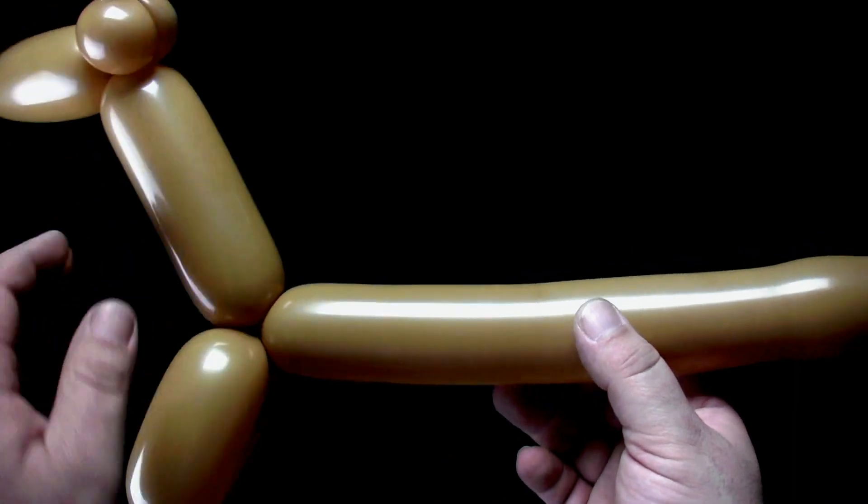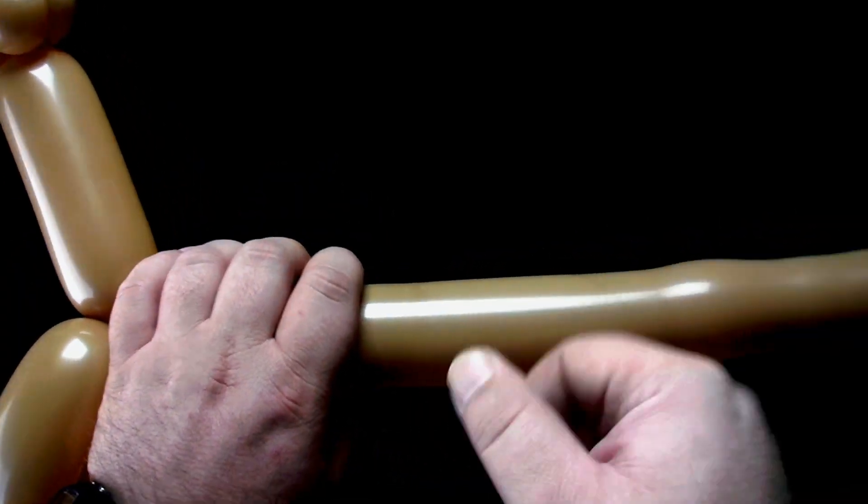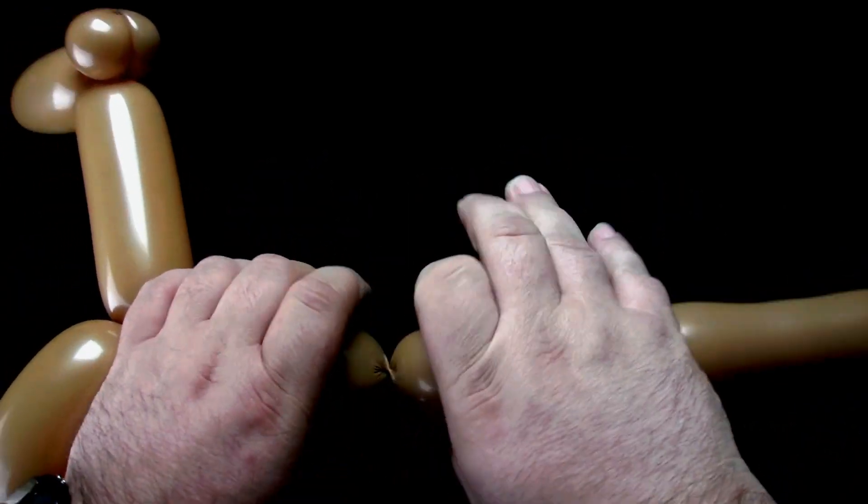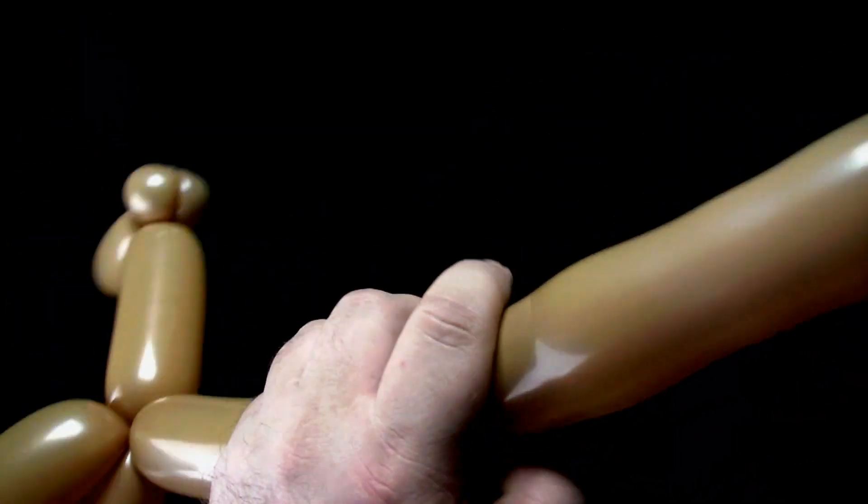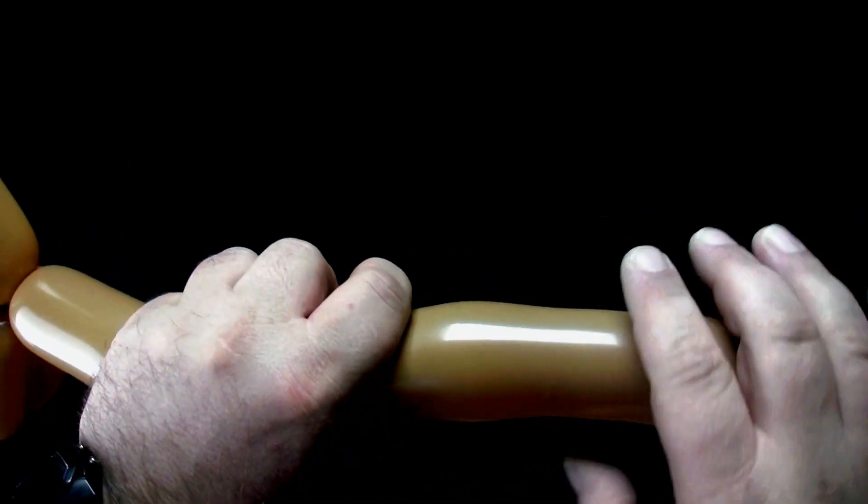Make a five-finger bubble for the torso. Twist two five-finger bubbles for the back legs.